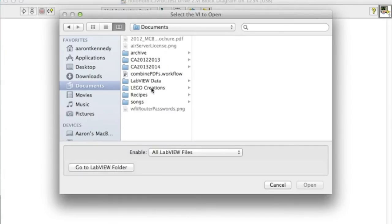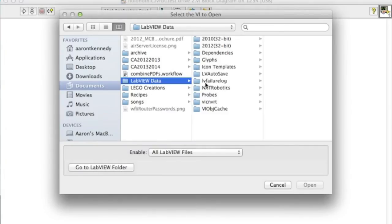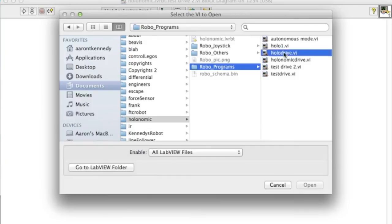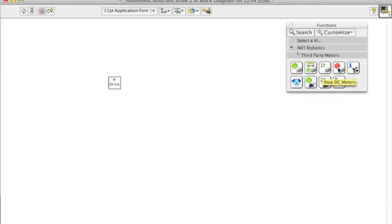When you're done, now you can open up a new program. Select a VI, find where you saved that VI, that holonomic drive VI. And you can use it in other programs.